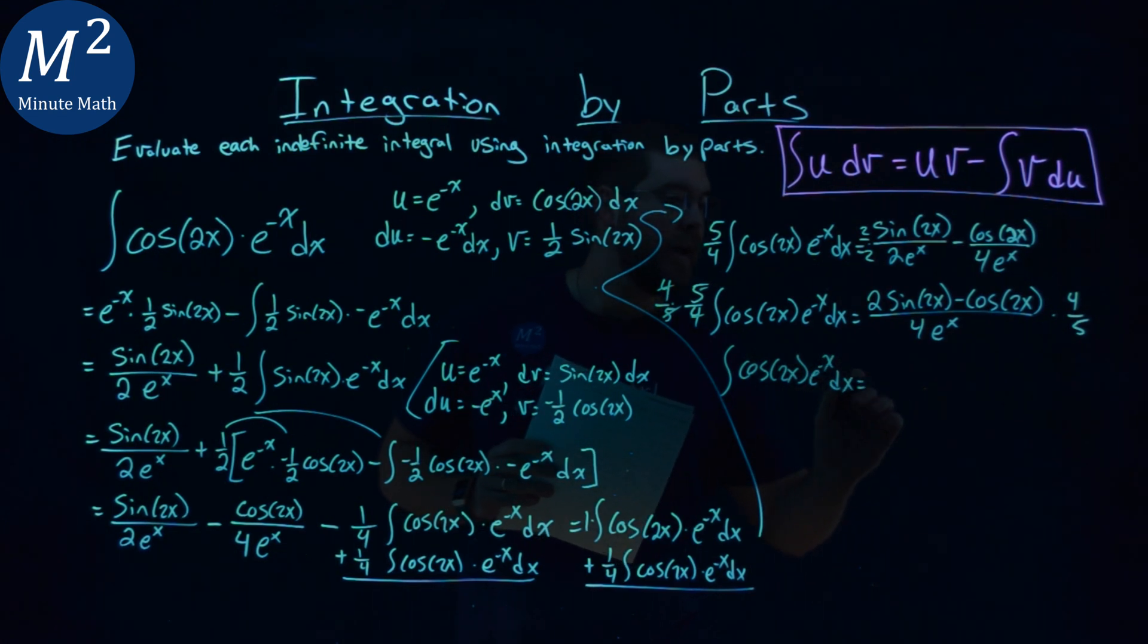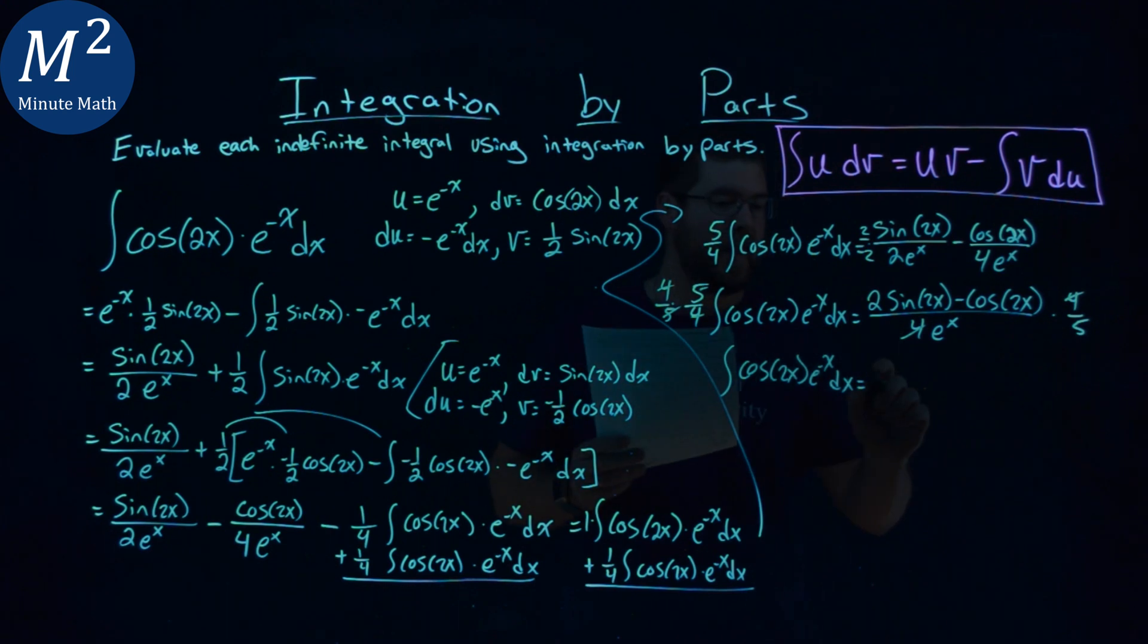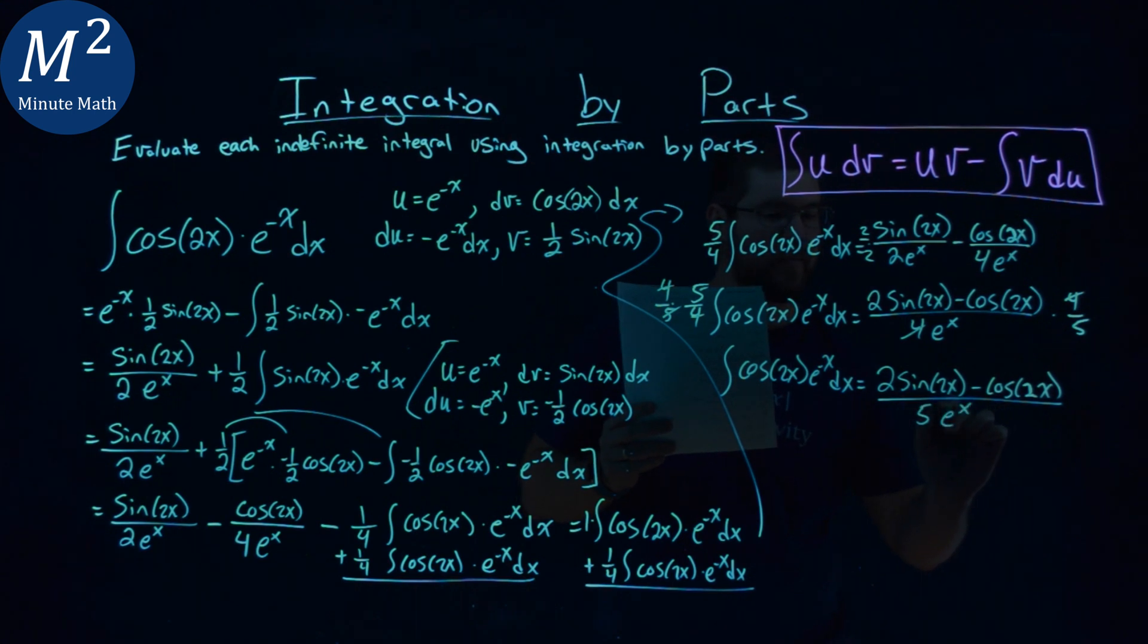Great. We have our integral of cosine of 2x, e to the negative x here, dx. And that's equal to, well, the 4's cancel. That's great. And we're left with 2 sine of 2x minus cosine of 2x over 5 e to the x power.